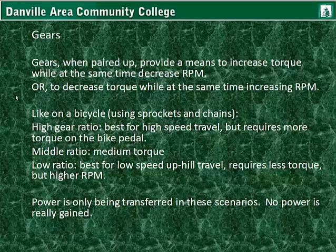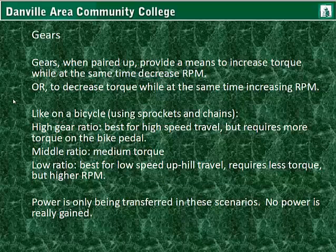Gears, when paired up, provide a means to increase torque while at the same time decreasing RPM, and vice versa. Like on a bicycle, which uses sprockets and chains, a high gear ratio is used for high speed travel but requires more torque on the bike pedal. A middle ratio provides medium torque and slight pressure on the pedal. The low ratio is best for low speed uphill travel and requires less torque but a higher RPM at the pedal. It should be known that power is only being transferred in these scenarios — no power is actually gained.